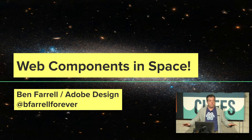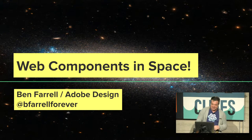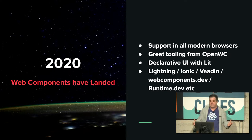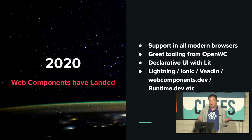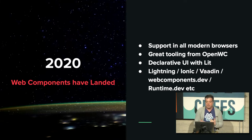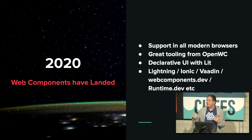We're all here for web components, but I want to talk about web components in space. Just to back up a little bit, Greg gave a great intro on how we have all modern browsers covered right now. Kind of 2019 I was saying web components have landed because we had the beta of Chromium-based Edge, but 2020 it's really here. We have some great tooling from folks like OpenWC, some great minimal tooling that really help your project along. Declarative UI with LitHTML and LitElement — the Polymer team are killing it.